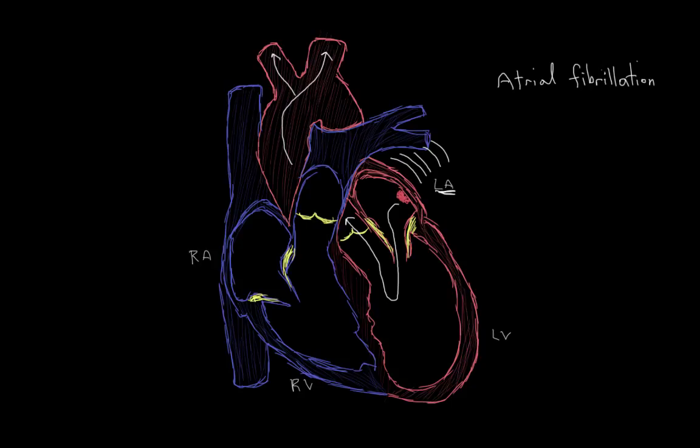Another heart condition that predisposes you to stroke is a myocardial infarct, or a heart attack. So let's say for example you had a heart attack that affected this part of your left ventricle here. Normally this left ventricle pumps blood and contracts really nicely and strongly, but after you've had a heart attack, it doesn't really contract properly.